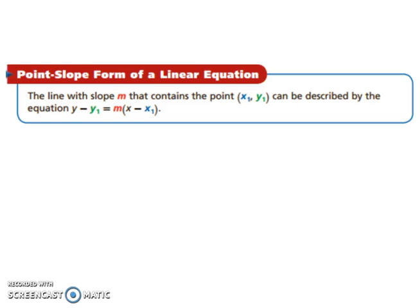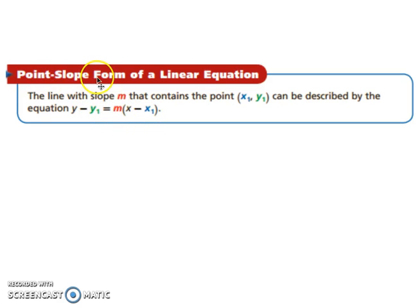Now let's look at point slope form of a linear equation. Similar to slope intercept form where you have y = mx + b, point slope form is y minus y₁ equals m times x minus x₁. Notice how you're using a point and a slope — hence point slope form.